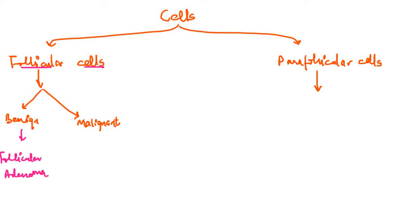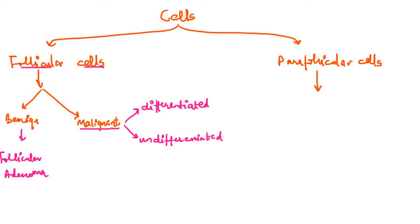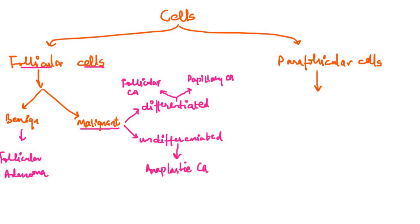Malignant lesions arising from follicular cells can be of two types: differentiated or undifferentiated. Differentiated means the cells are recognizable and distinguishable; undifferentiated means the cells are not differentiated into any recognizable cell type — they are just bizarre-looking cells. Among the differentiated lesions we have follicular carcinoma and papillary carcinoma. Among the undifferentiated lesions we have anaplastic carcinoma.